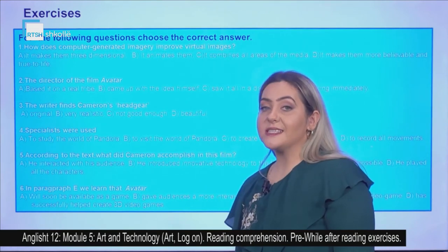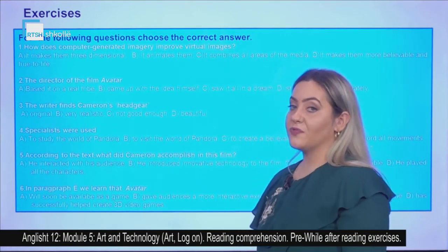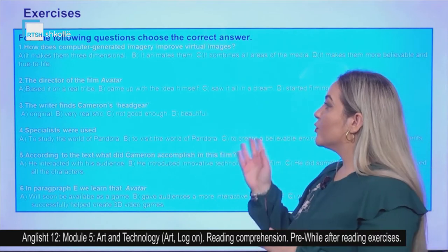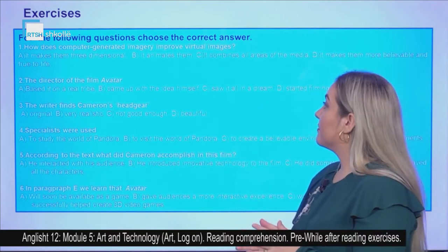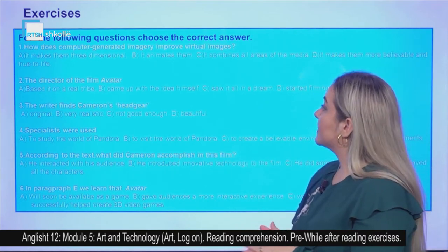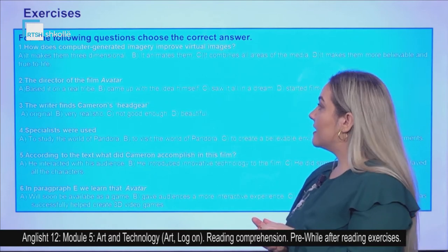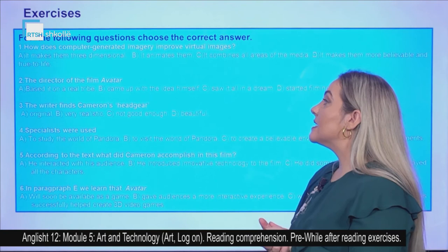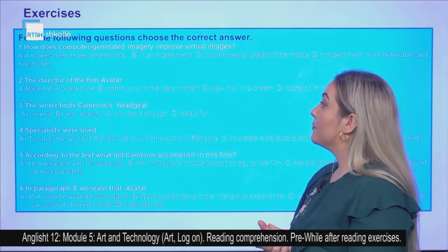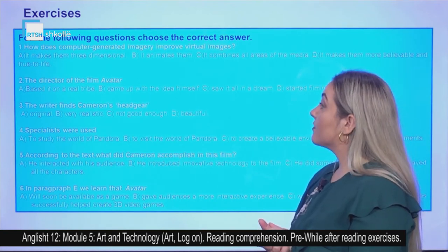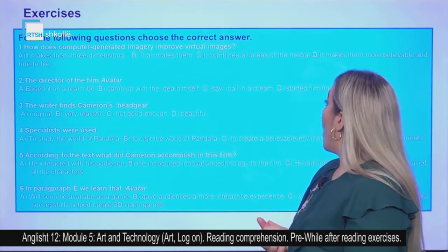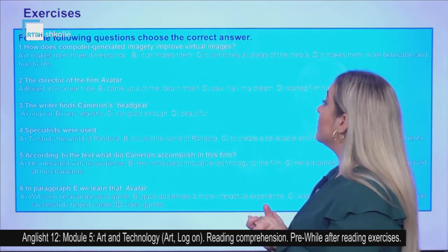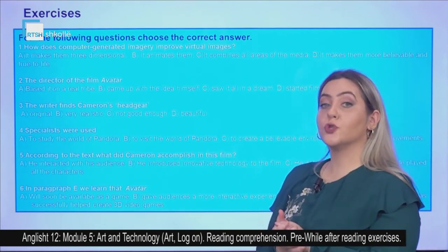Now let's do some exercises about it. Did you understand it? Choose the correct alternative or answer. How does computer generated imagery improve virtual images? A) It makes them three-dimensional. B) It animates them. C) It combines all areas of the media. Or D) it makes them more believable and true to life.